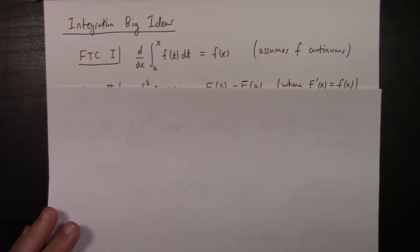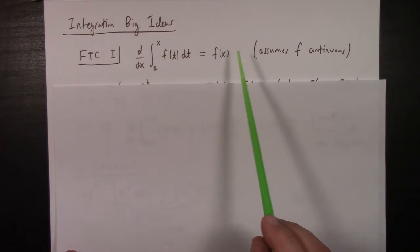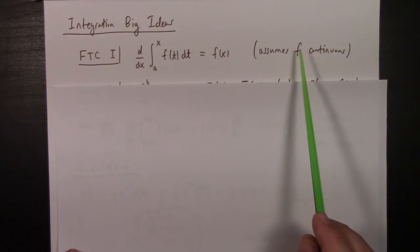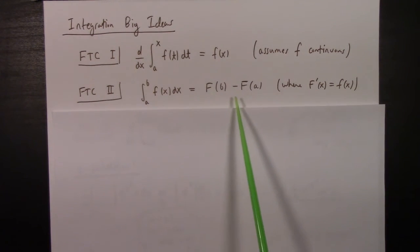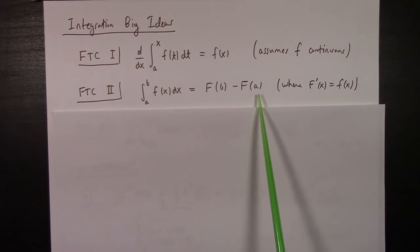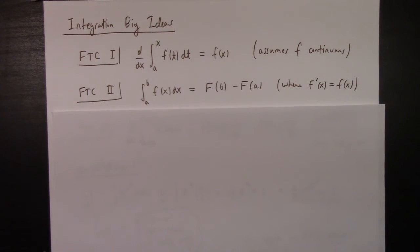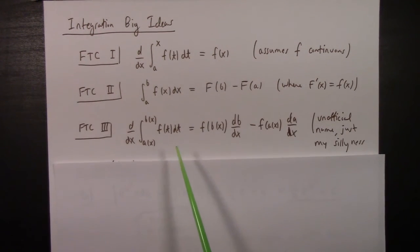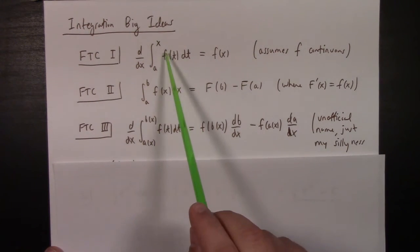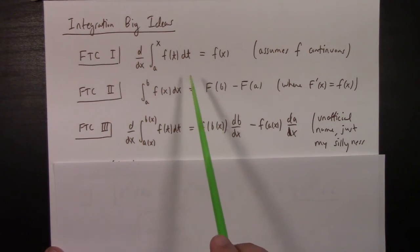The big ideas of integration: FTC part one — if you differentiate an integral with a variable bound, you get the function popping back out. This comes up in applications like the Fresnel integrals and the sine integral function in optics. Fundamental Theorem of Calculus part two is the big idea: it's remarkable that signed area is connected to the difference of antiderivatives — a totally weird but important theorem. FTC part three combines FTC one and two with the chain rule: if you have variable bounds, you multiply by the derivative of the variable bound.